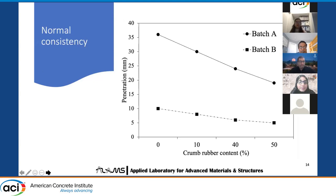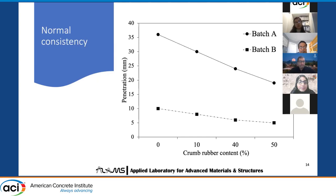Looking at the normal consistency or penetration value of the fresh mortar samples, we can see that the workability or penetration decreases with the increased amount of crumb rubber. That is because crumb rubber does not absorb water and more air is trapped between the rubber particles and in the cement matrix, resulting in a less workable mix. Batch A had better workability than Batch B because Batch B had a lot more sand, and as a consequence, a lot more crumb rubber particles too, so the mix was relatively drier.